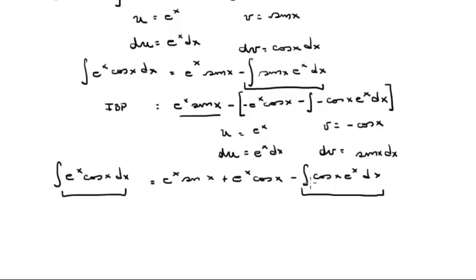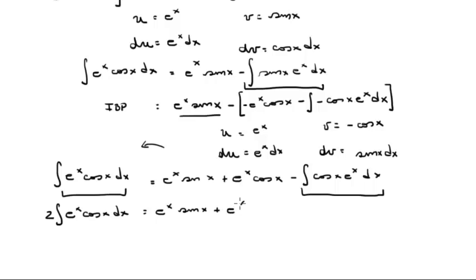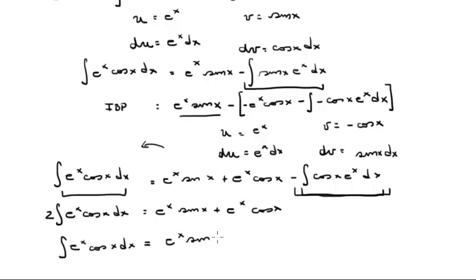Notice — they're the same integral! So I can pass this to the left side of the equation and I'll have two times the integral of e to the x cosine of x dx. Dividing both sides by 2: the integral of e to the x cosine of x dx equals e to the x sine of x plus e to the x cosine of x, all divided by 2, plus c.